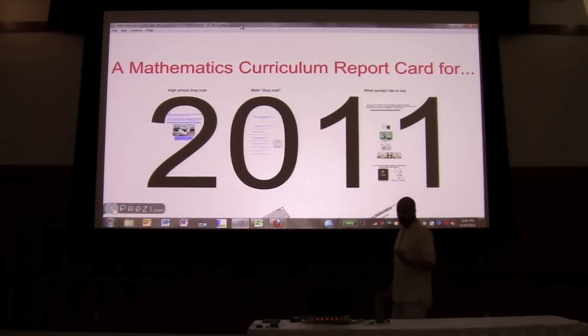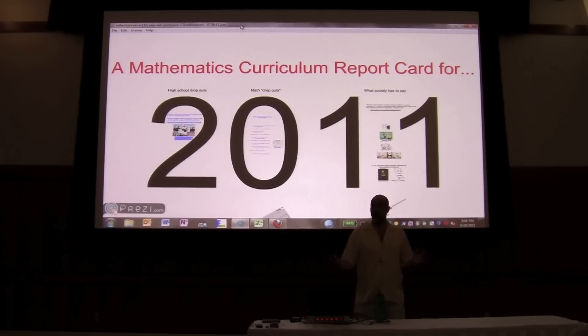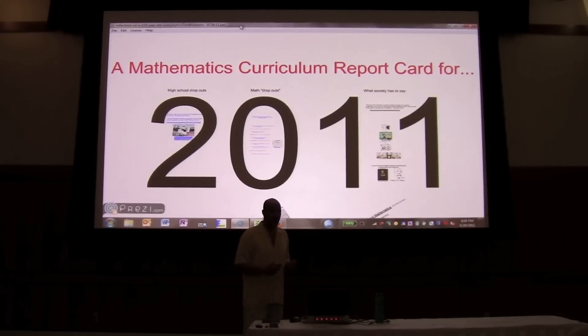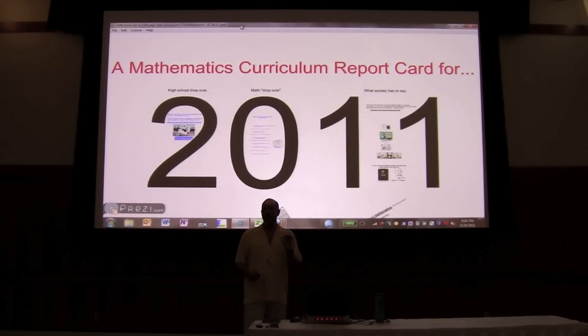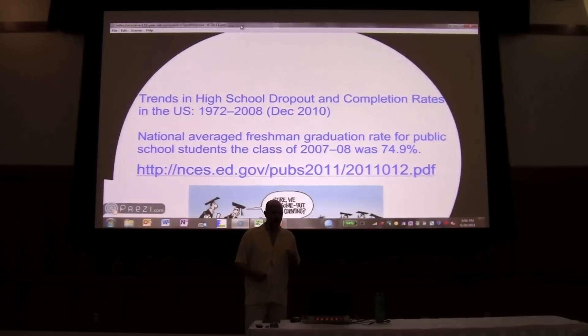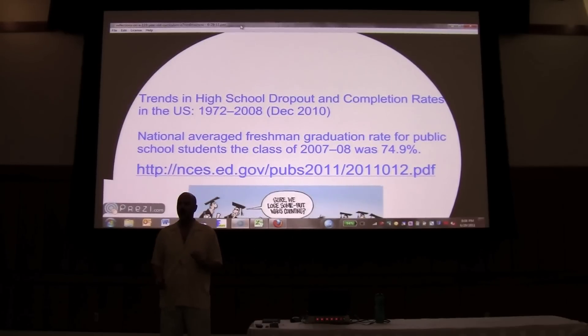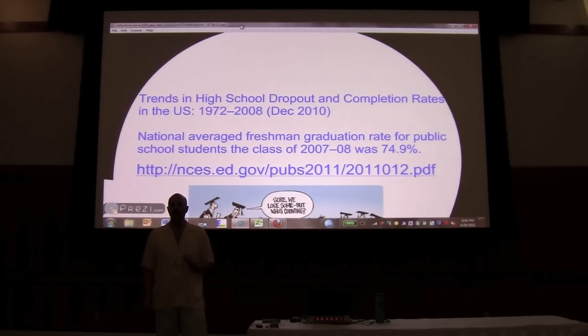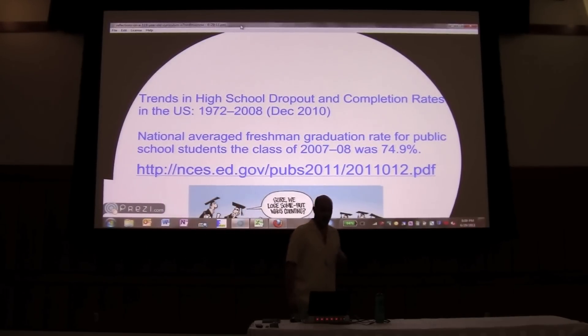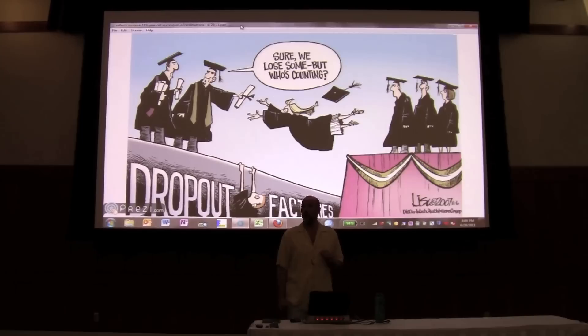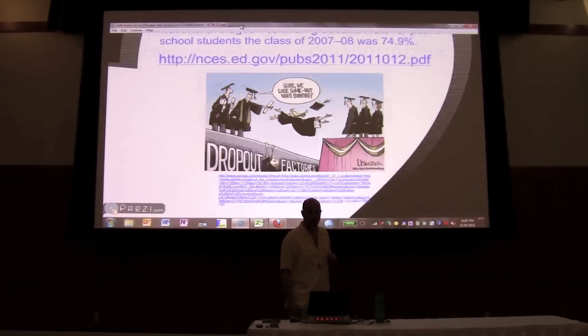Before I do that, I'd like to say, so how's it going for us, sticking with this curriculum, relatively unchanged for 119 years. First, what I'd like to do is just talk about high school dropouts. In the United States, 25% of teenagers don't graduate from high school. 7,000 students per day drop out of high school. 1.3 million U.S. high school dropouts per year. Dropout factories, sure, we lose some, but who's counting? Well, some people are counting 1.3 million.